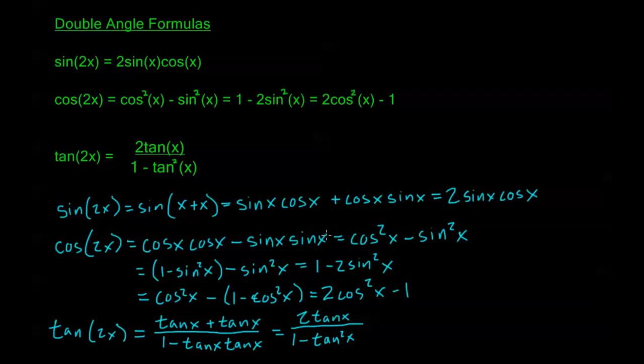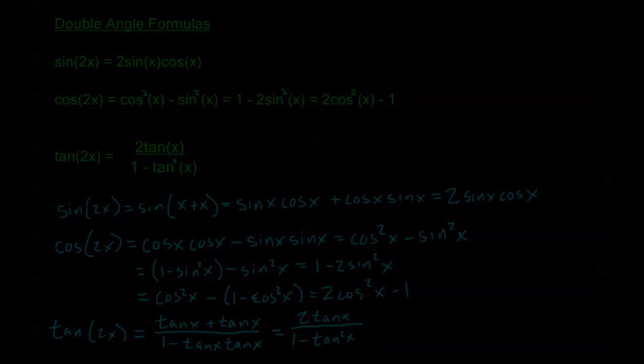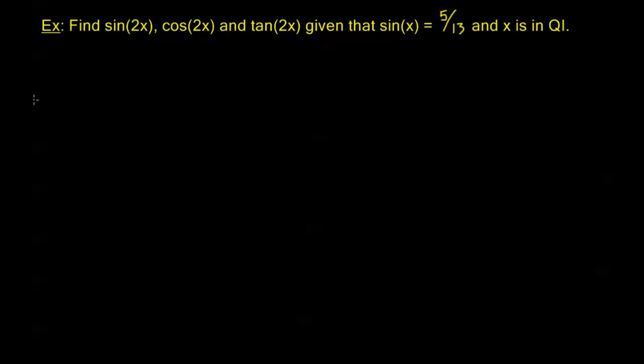This is how we get these double angle formulas - they're just a very special case of the addition formulas we're already familiar with. But they pop up quite often in problems. Let's do an example. We want to find sine 2x, cosine 2x, and tangent 2x given that sine x is 5 thirteenths and x is in quadrant 1.